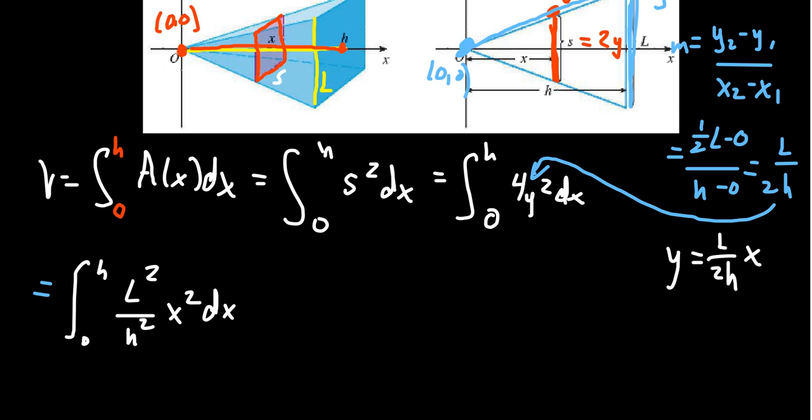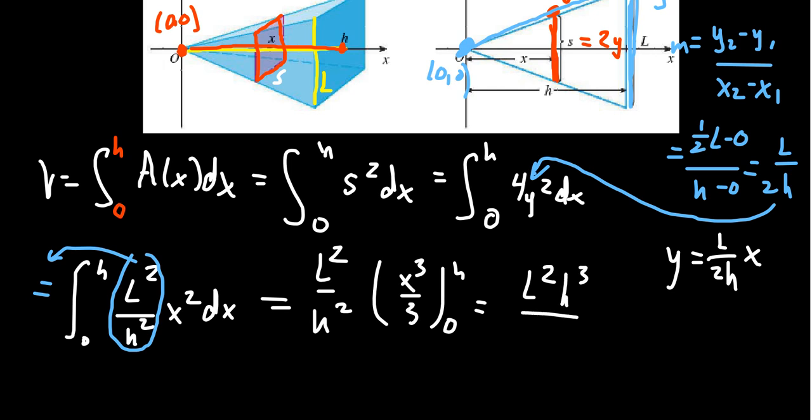The L squared over h squared is a constant we can factor out of the integral. We're left with just an x squared. The antiderivative of x squared is going to be x cubed over 3, plug in zero, plug in h.